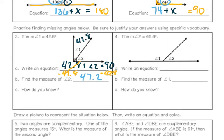You could use different vocabulary to justify how you know. Since this angle is complementary, I need the sum of angle one and angle two to be 90 degrees. Since we know that angle one is 42.8 degrees, the remaining amount is 47.2 to make a complementary angle.